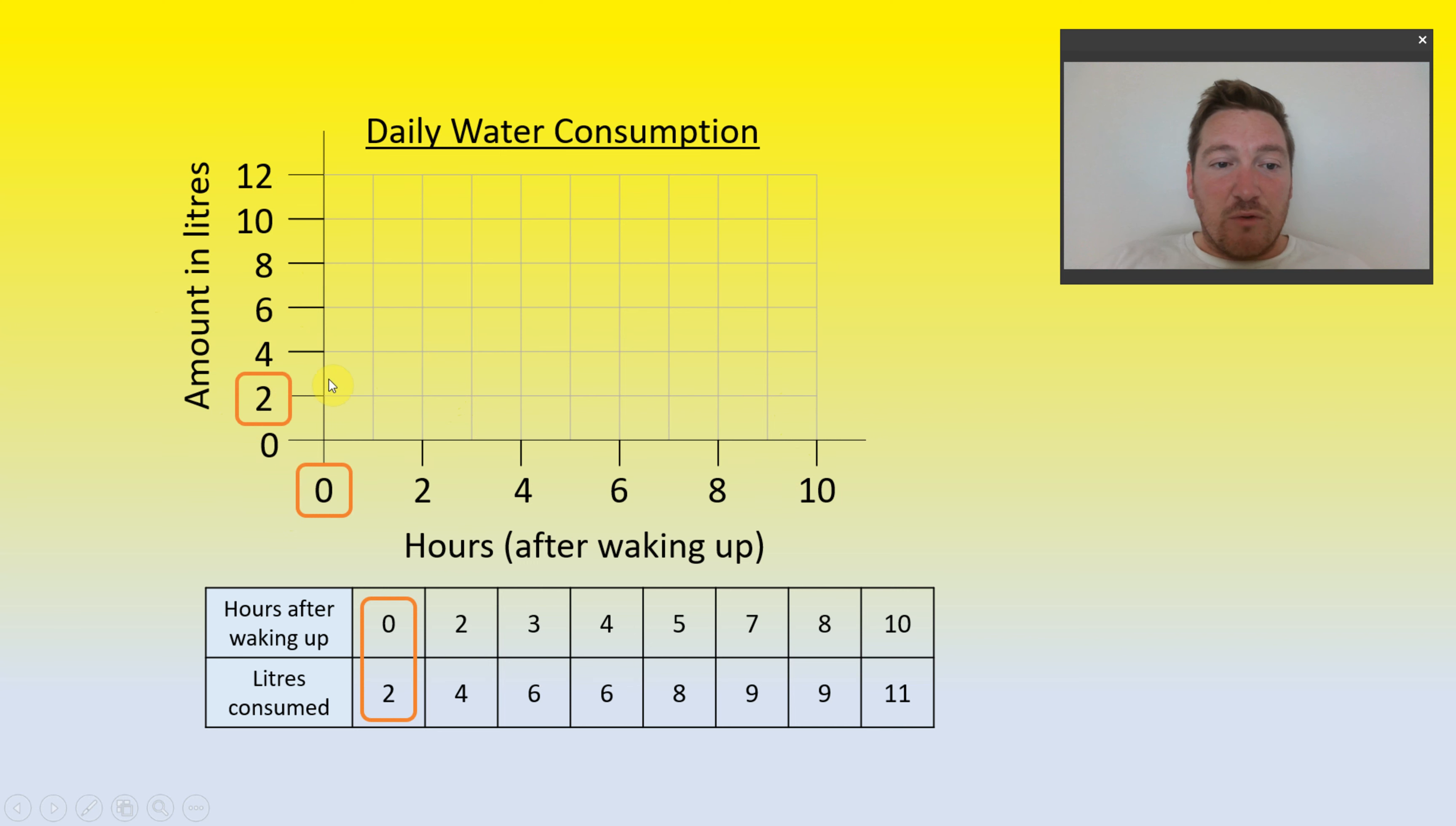Once we've got that we can start plotting our figures. So we find the zero, move up, find the two, and put our first mark down. Then the next one we find the two, move up to the four, put our x down. Now if I put it up to the next box, I'd have made a mistake. I need to make sure that I'm following the exact hours and liters to ensure it goes into the right place. Once I find the right spot, I can join the line up, plot the rest of my data, and create a line graph.